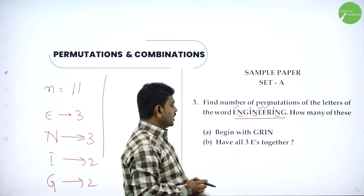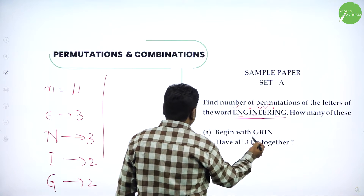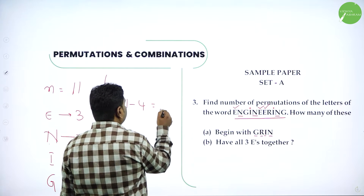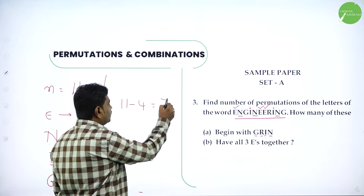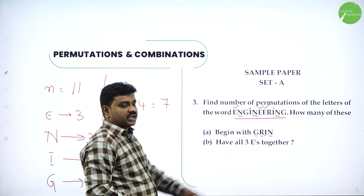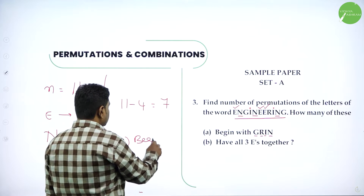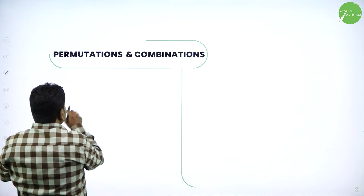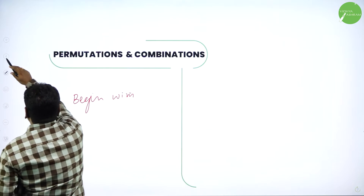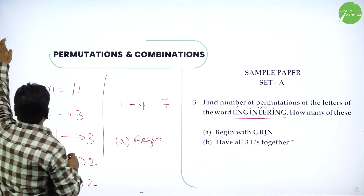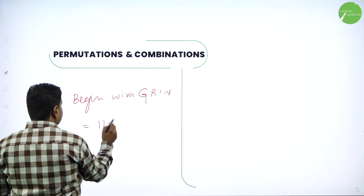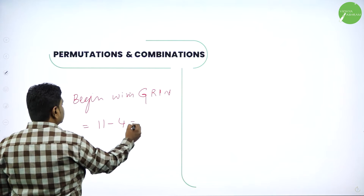How many begin with G, R, I, N? If we fix G, R, I, N at the start, we remove those 4 letters and are left with 7. So we need to arrange the remaining 7 letters. When we remove one G, we have 1 G left; remove one N, we have 2 N's left; R has only 1 and is used; I had 2 and we used 1, so 1 I remains.